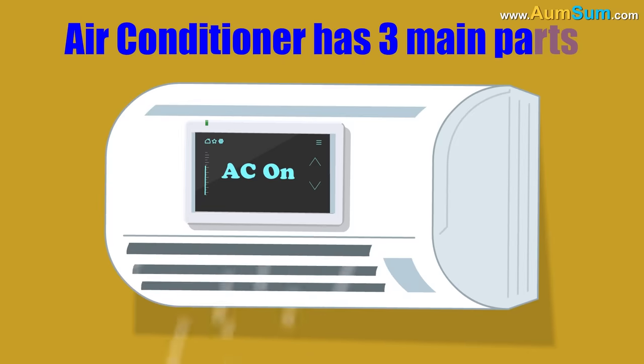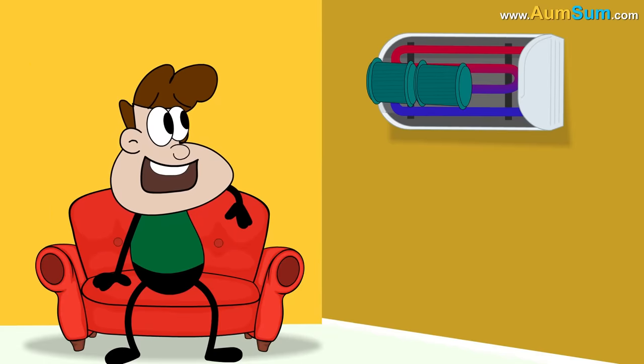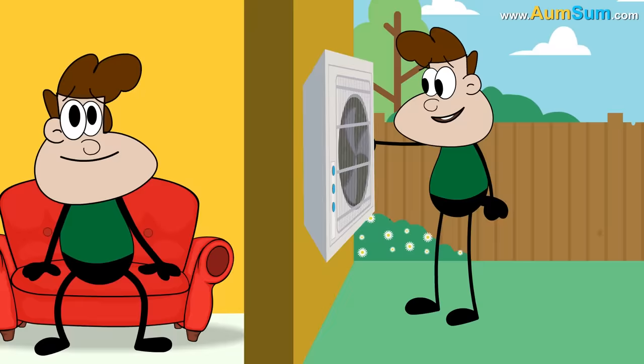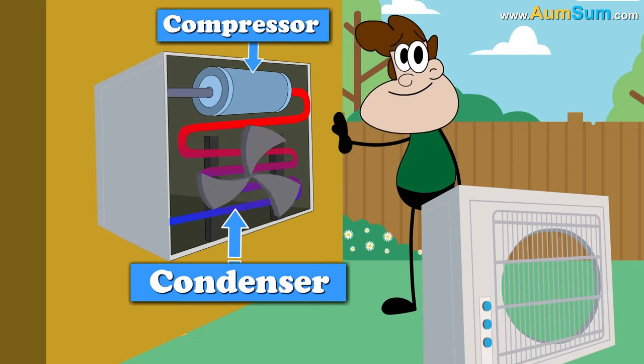An air conditioner has three main parts. Firstly, evaporator which is located inside the house. Finally, compressor and a condenser which are usually located outside.